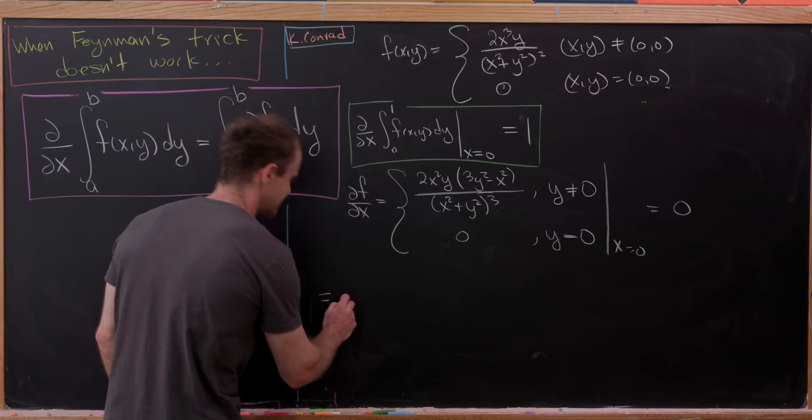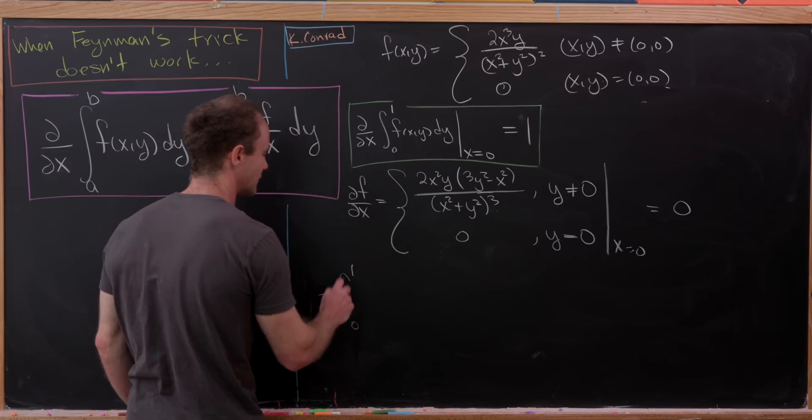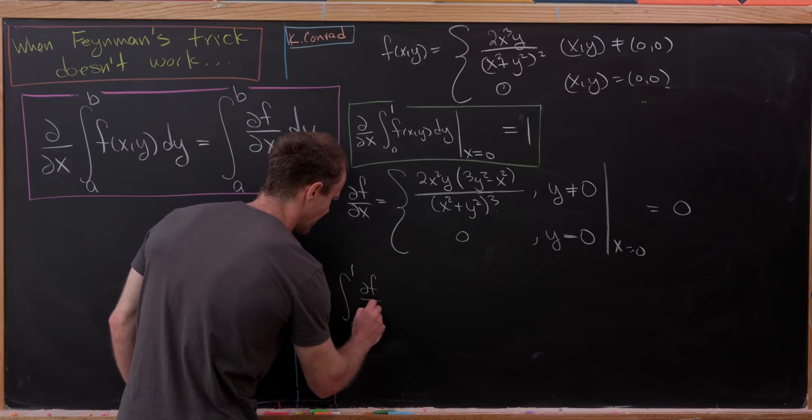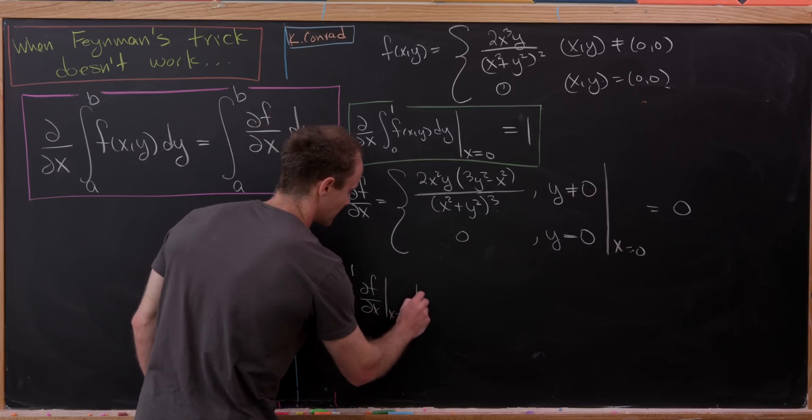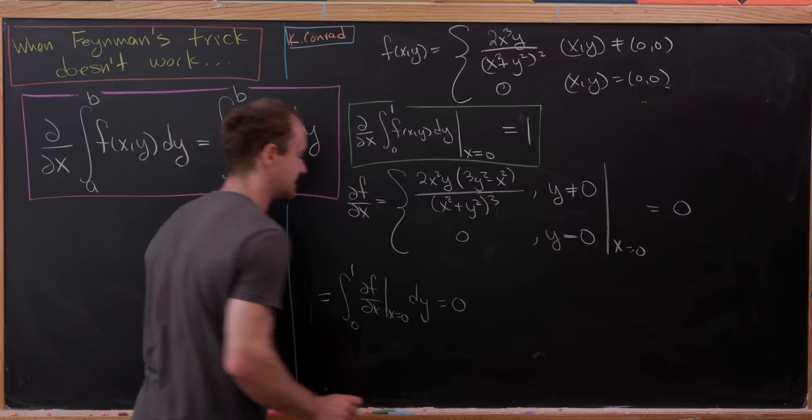So that tells us that if we have the integral from 0 to 1 of the partial of f with respect to x where x has been evaluated at 0 dy, you get 0.